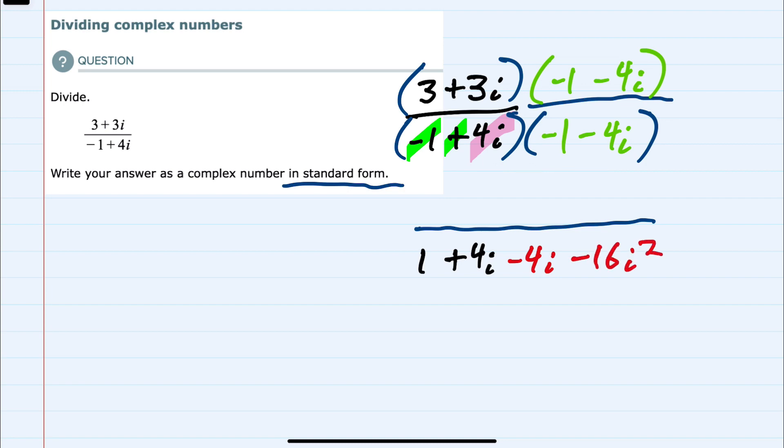And we'll come back and simplify that denominator. But first, I'm going to go ahead and distribute on the top so that 3 times the minus 1 in the top is a minus 3. 3 times a minus 4i is minus 12i.